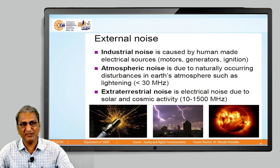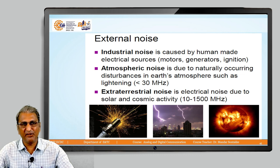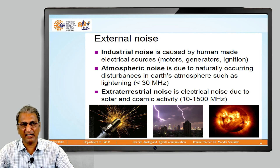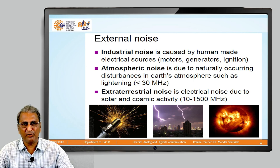The third type is called extraterrestrial noise. It is electrical noise due to solar and cosmic activity. Every source is related to a specific frequency measured in hertz. For extraterrestrial noise, the frequency range is from 10 megahertz to 1500 megahertz. These three — atmospheric, industrial, and extraterrestrial — are the major contributors of external noise.